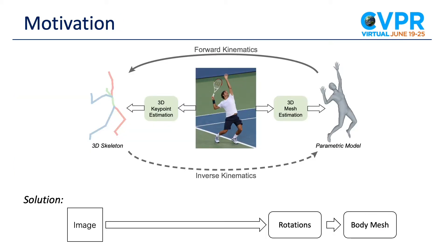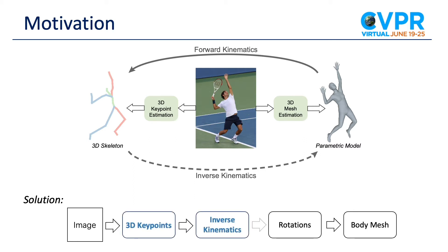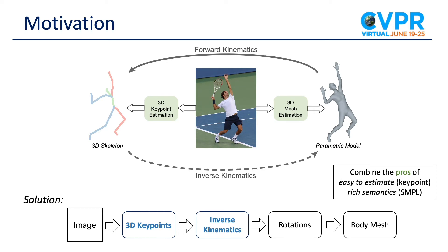In this work, we notice that 3D skeleton and parametric model can be transformed into each other by forward kinematics and inverse kinematics. Therefore, instead of directly estimating the rotation, we can first estimate the 3D skeleton, then use inverse kinematics to estimate the rotation and obtain the final body mesh with SMPL. In this way, we can combine the advantages of 3D key points and the SMPL models, which are easy to estimate and have rich body semantics.